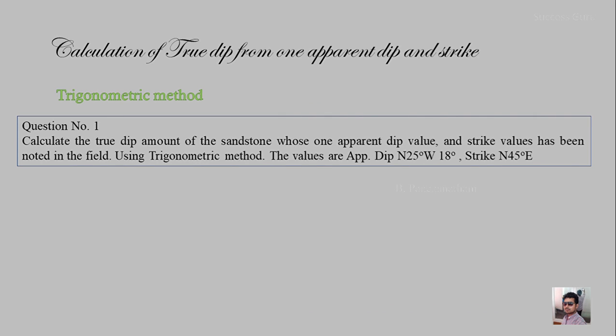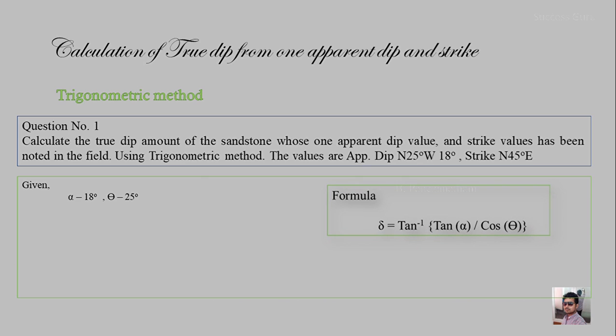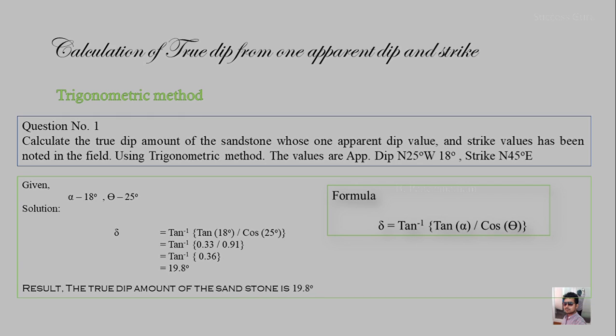The first sum: Calculate the true dip amount of a sandstone whose one apparent dip value and strike have been noted in the field, using the trigonometric method. The apparent dip is N25°W with a dip amount of 18°, and the strike is N45°E. Substituting into the formula — sigma = tan⁻¹(tan α / cos θ) — with alpha = 18° and theta = 25°, we get sigma = 19.8°. Therefore, the true dip amount is 19.8°.